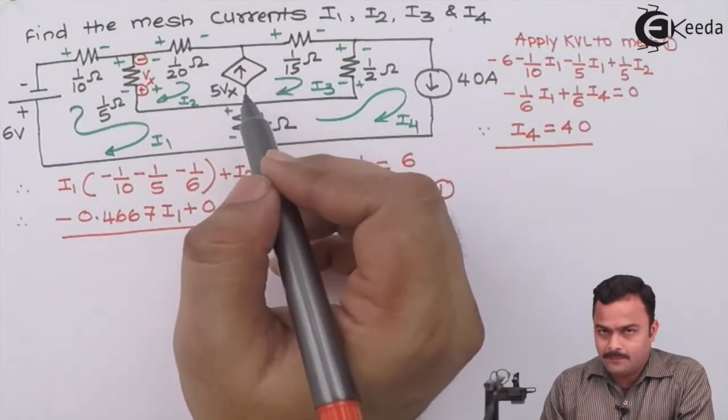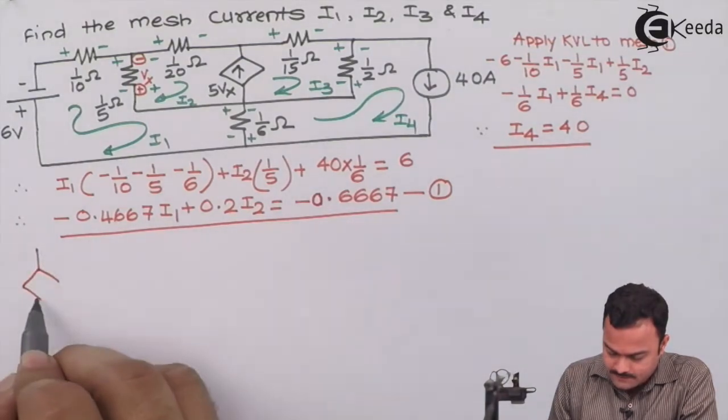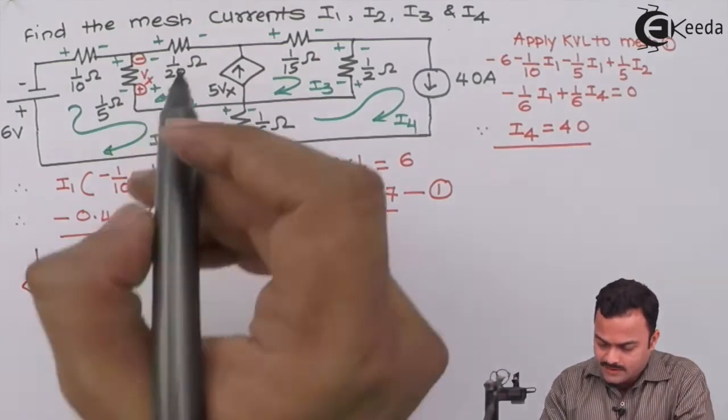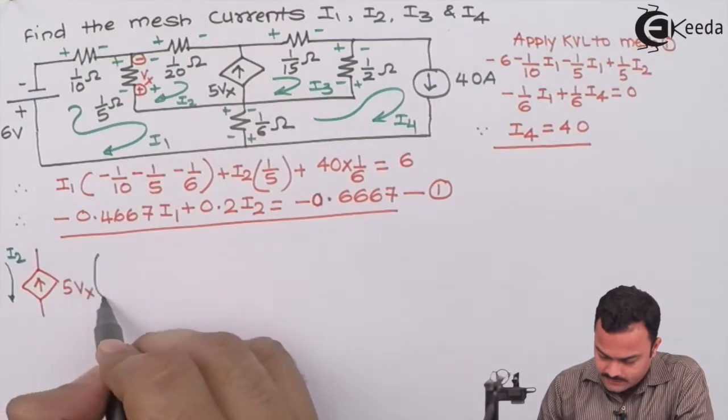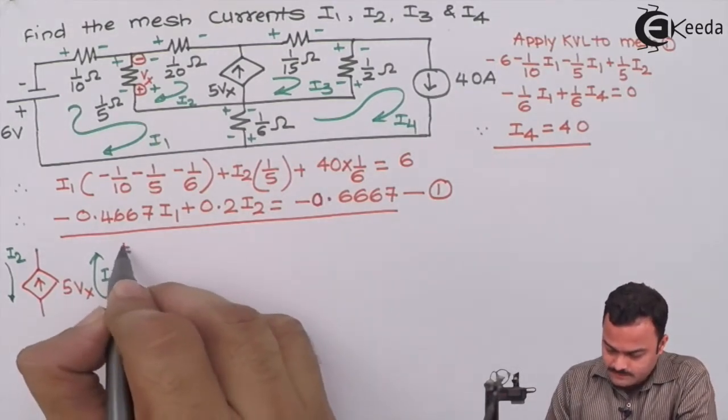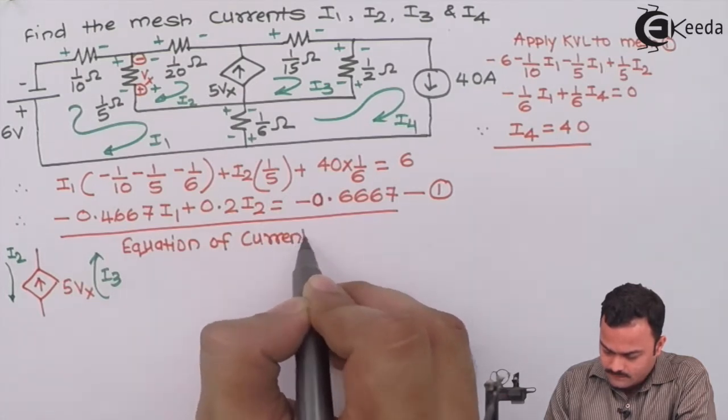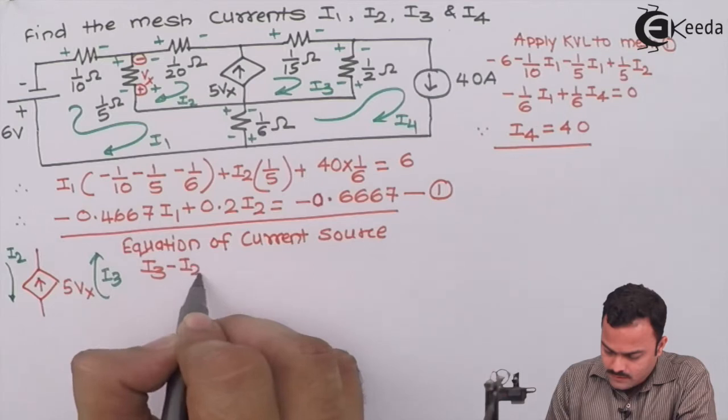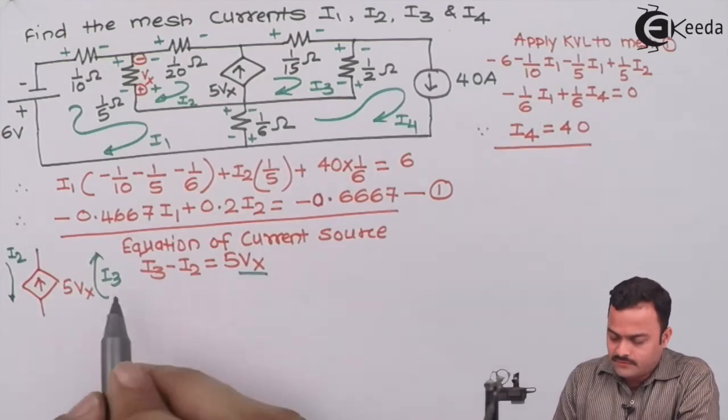KVL to mesh 2 and 3 cannot be applied directly because of this current source. This is across vx. This is carrying two currents i2 in the downward direction and i3 in the upward direction. The given direction is upward matching with i3 so the equation of current source will be i3 minus i2 equal to 5 vx.